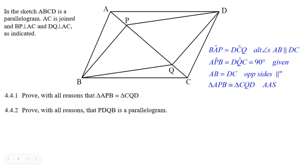Now prove with all reasons that PDQB is a parallelogram. Well, we've got that this is 90 degrees here, we're kind of given it's perpendicular, this angle here and this angle here, and this angle here is 90 degrees. That forces BP and QD to be parallel.